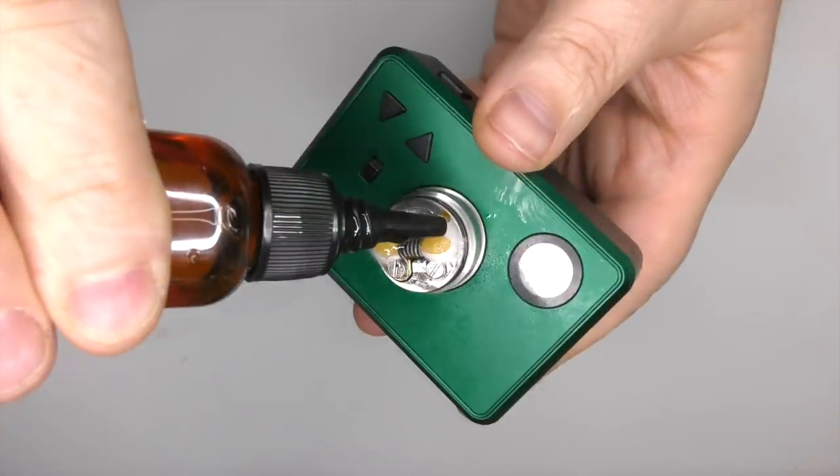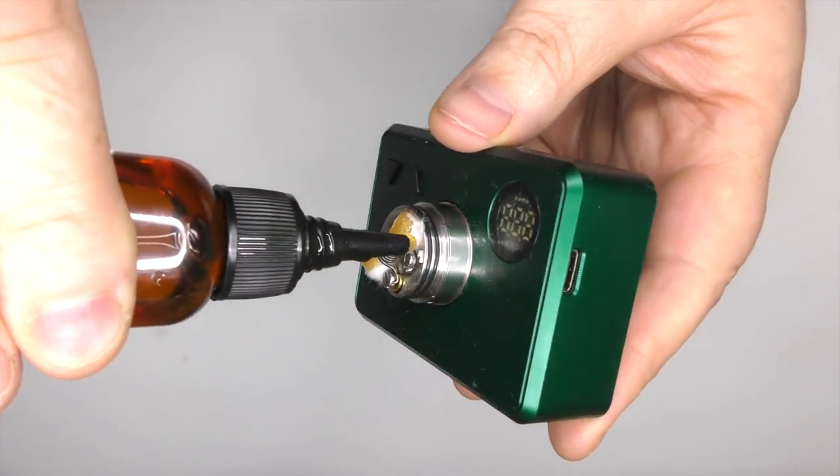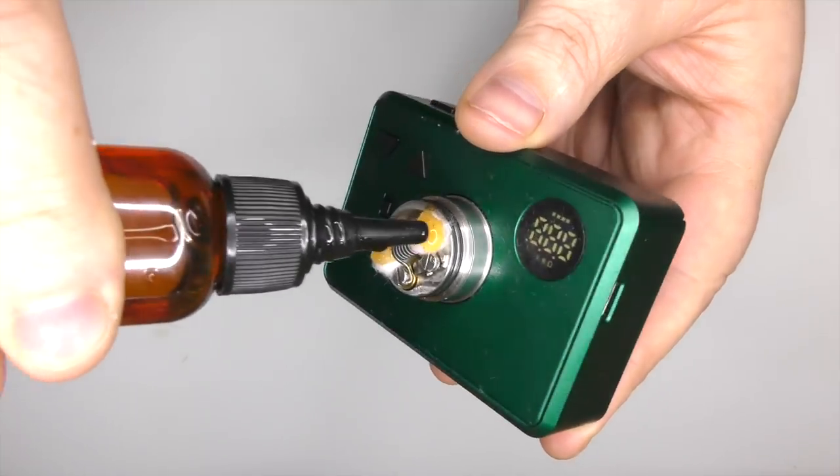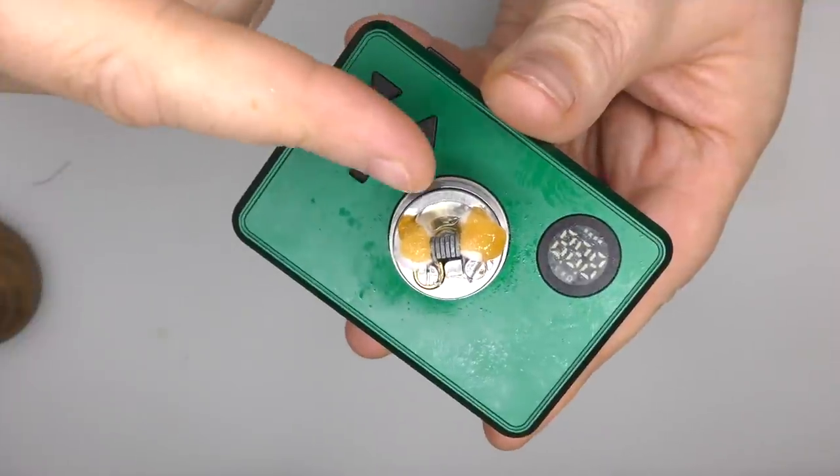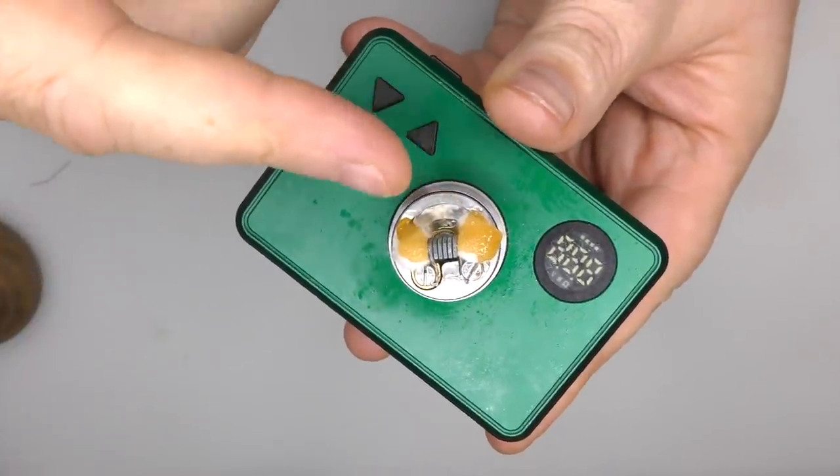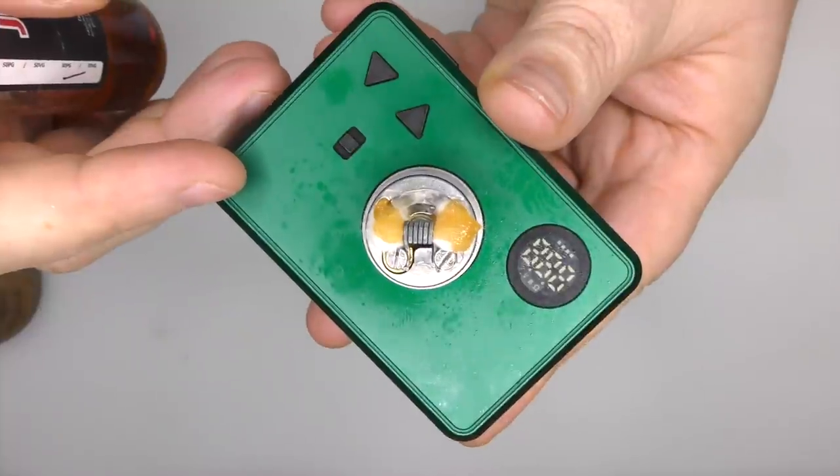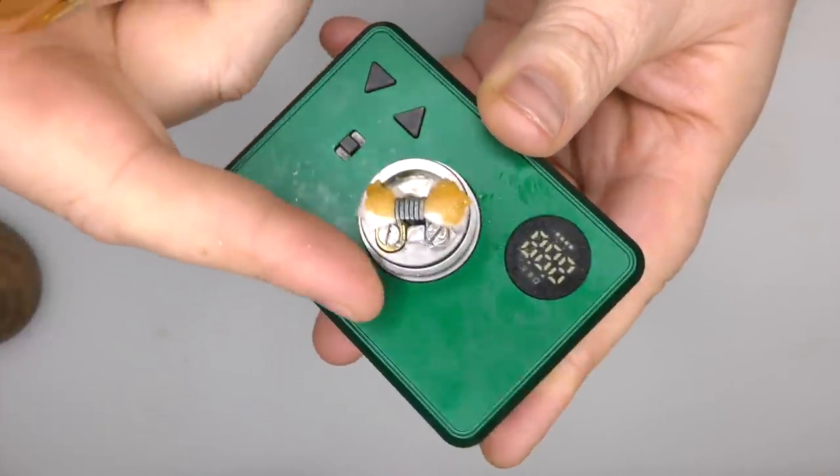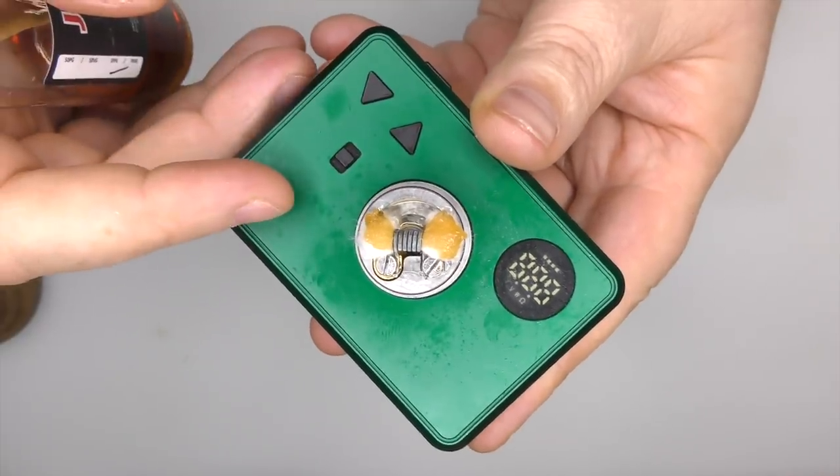Get some juice on here. The great thing, or the one thing I do like is the fact that the air pin is quite high. Even mouth to lunging, if you get some juice in that deck there, then it's not going to go down the air pin and you don't get juice bouncing about inside the AFC. So that's a thumbs up there.